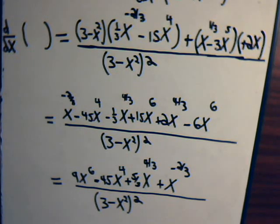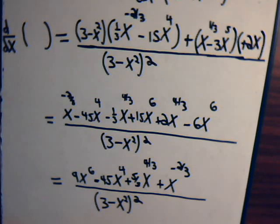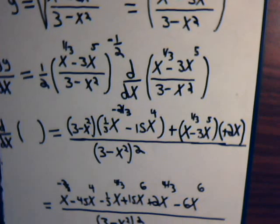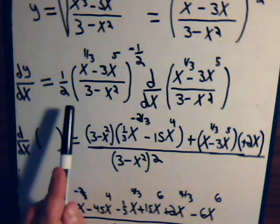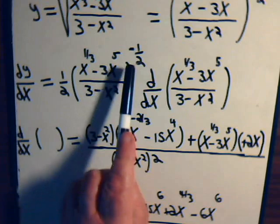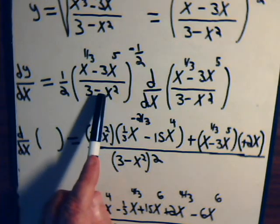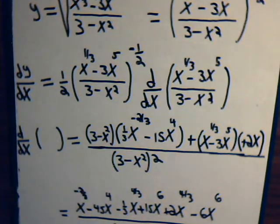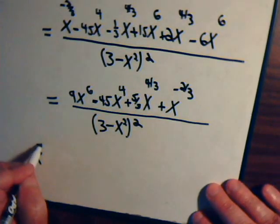So we have found that this expression is the derivative of the quotient. All that remains is to multiply this by the outer factor. Notice that the outer factor is to the minus 1/2. If we take the reciprocal of this expression, the negative exponent becomes a positive exponent, so this would be upstairs and the other part downstairs, to the plus 1/2.